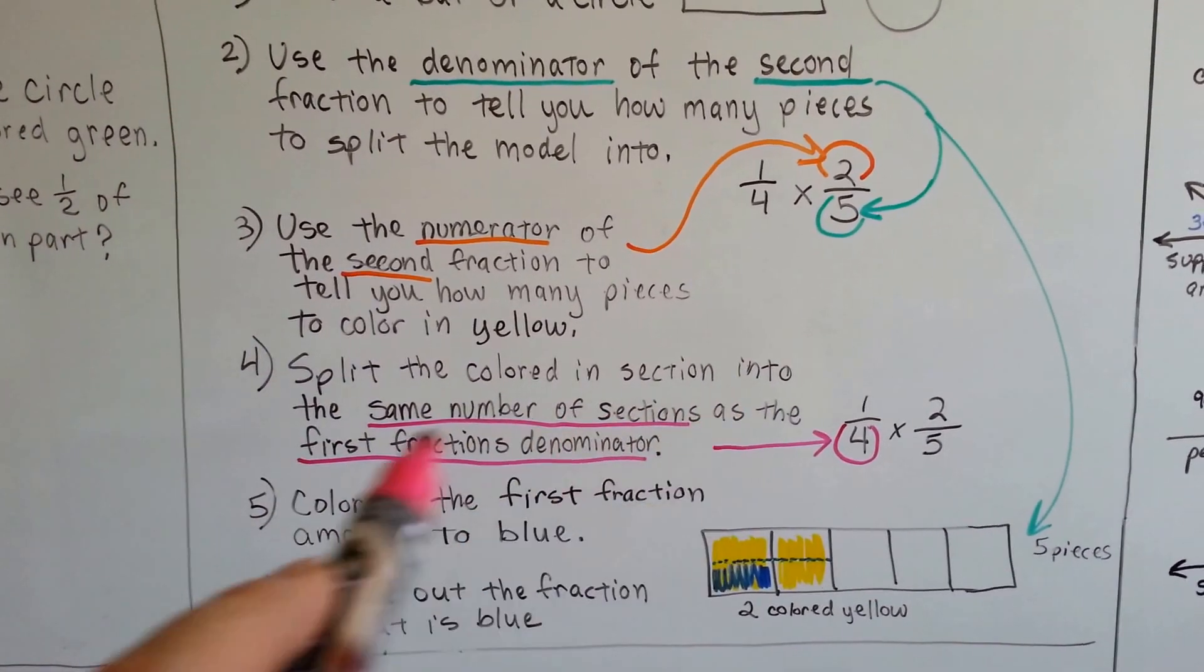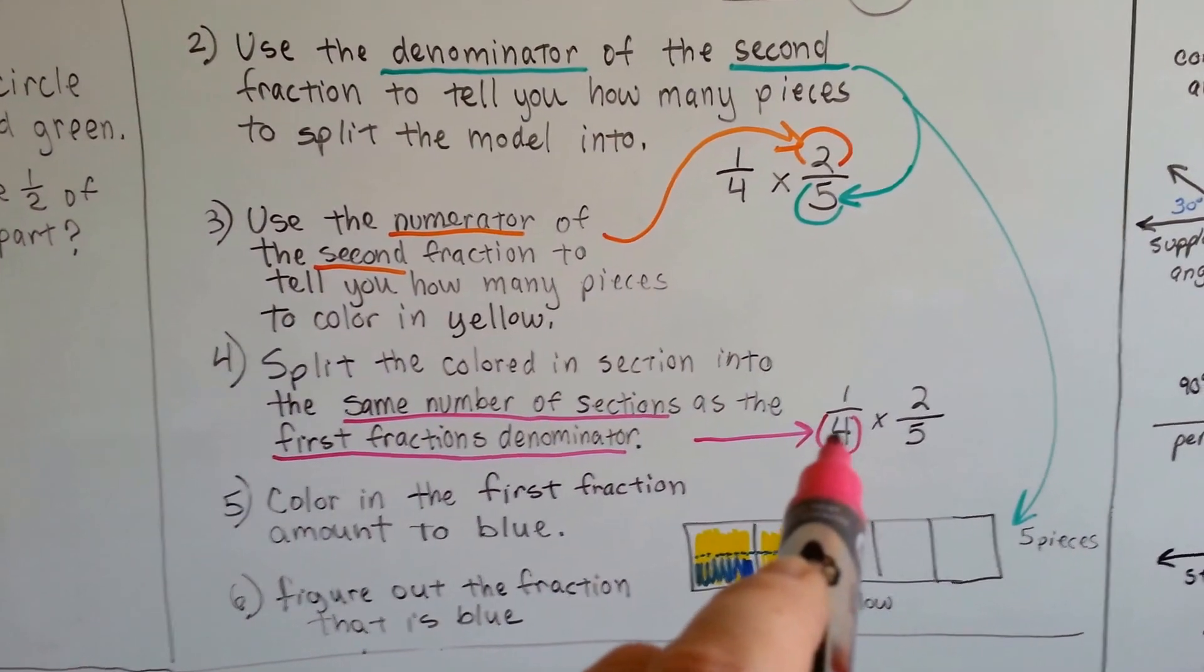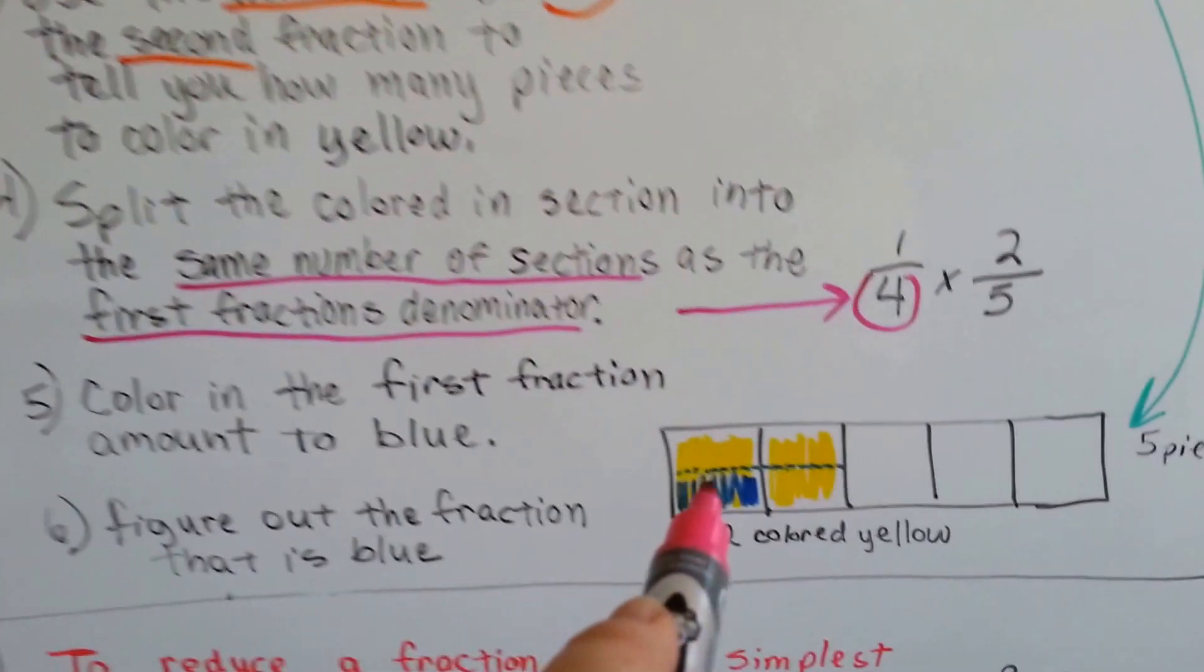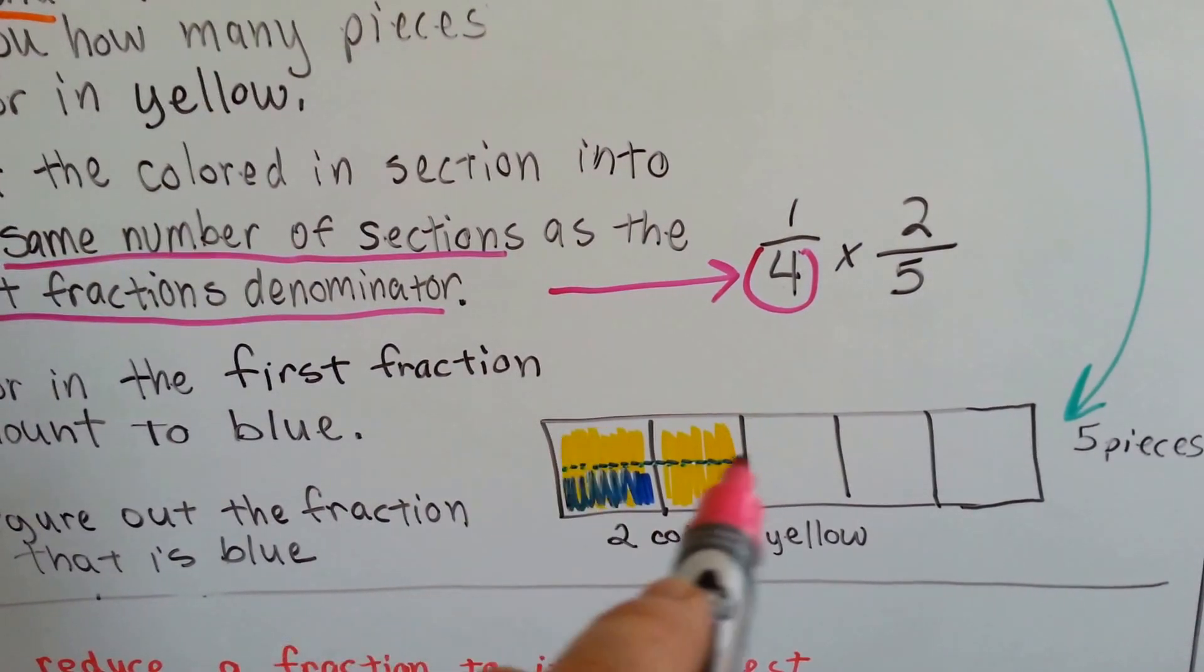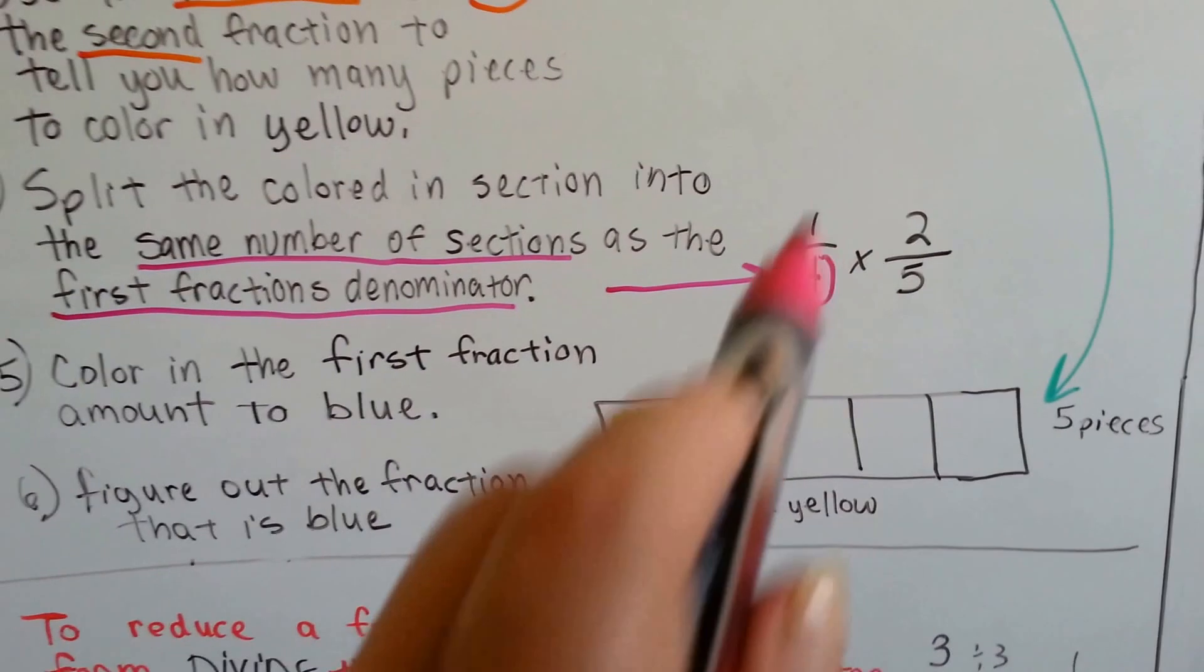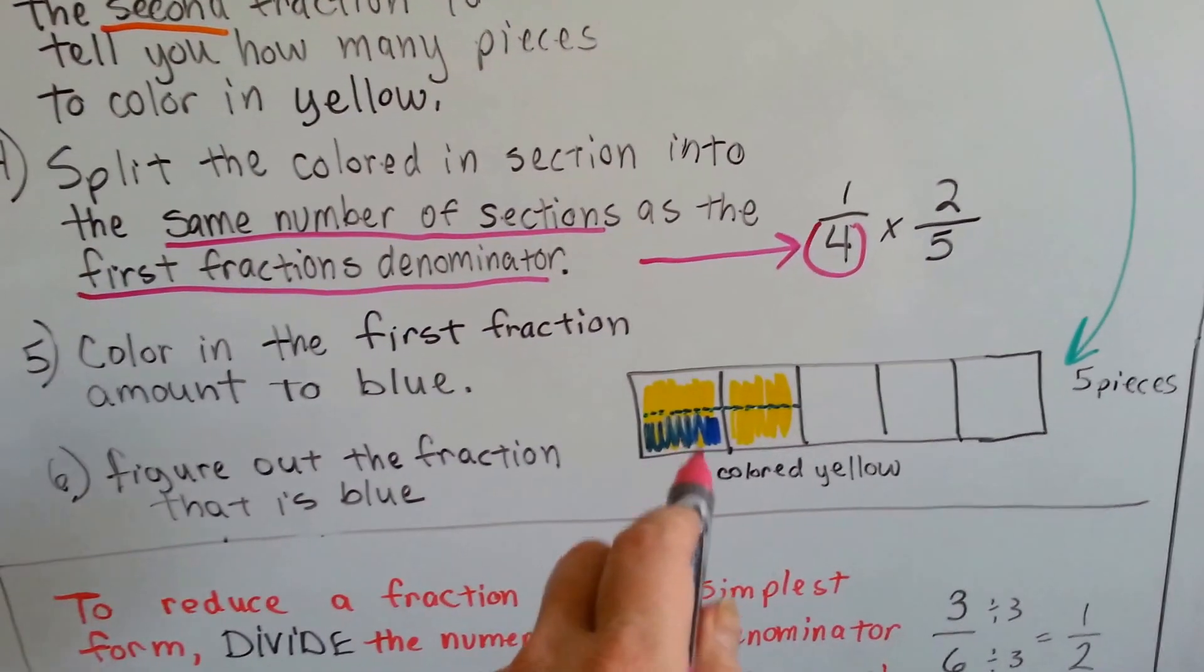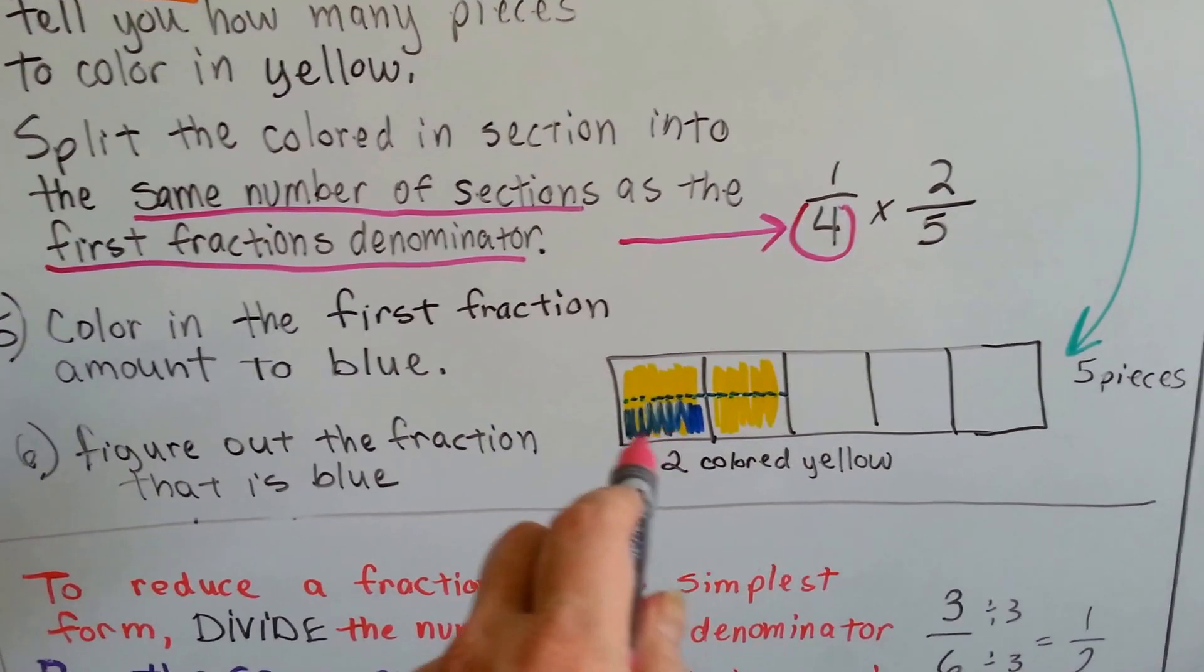Then, we split that yellow section into the same number of sections as the first fraction's denominator, 4. So I had to split the yellow part into 4's: 1, 2, 3, 4. I split it in half and it made 4. And now I need 1 of them. So I colored 1 of the 4, I colored it blue.